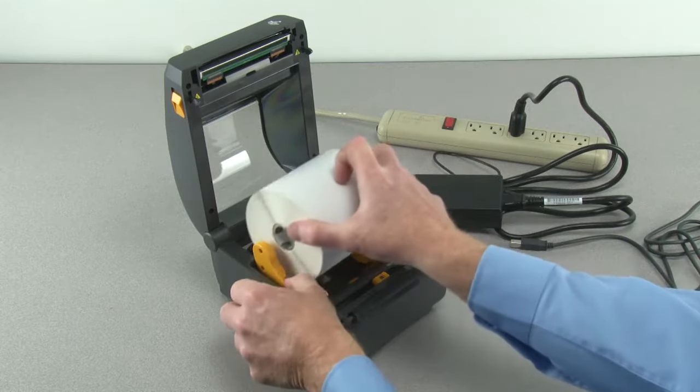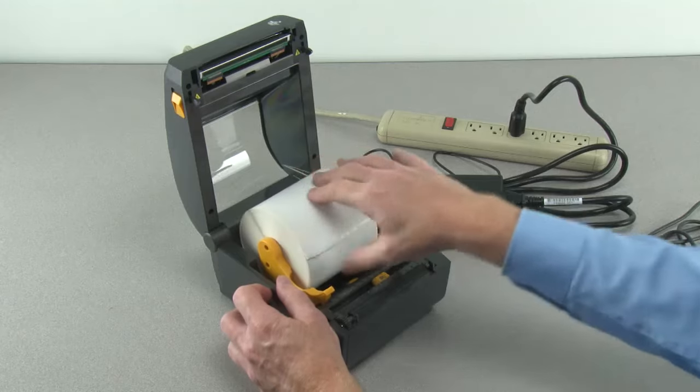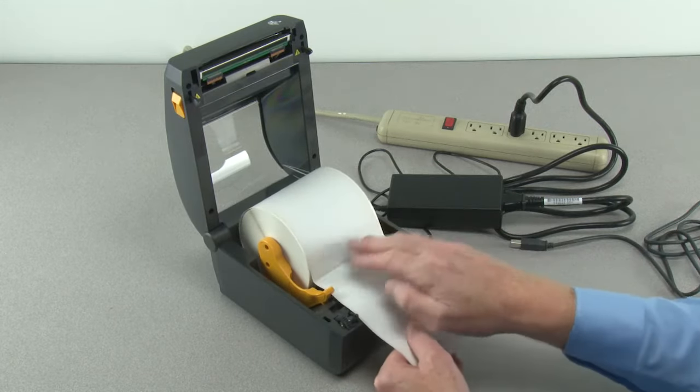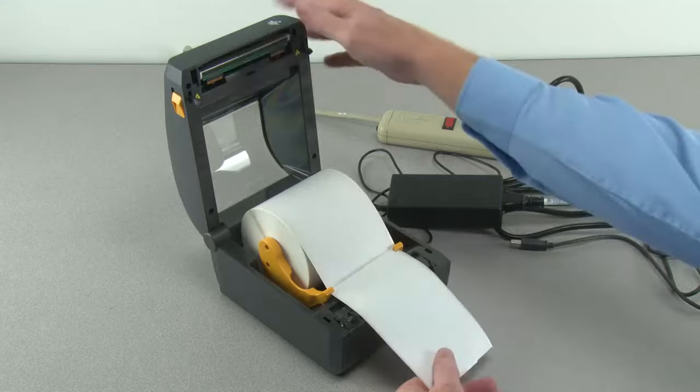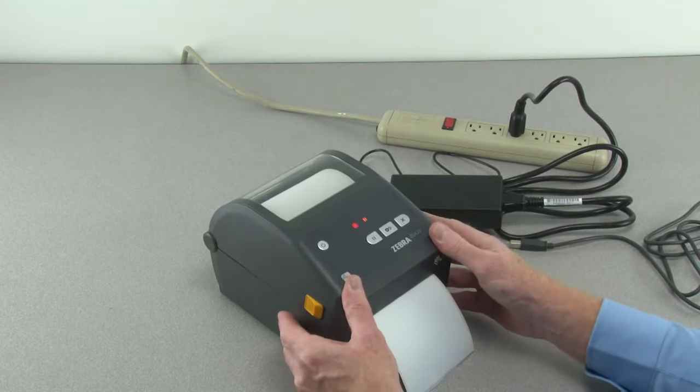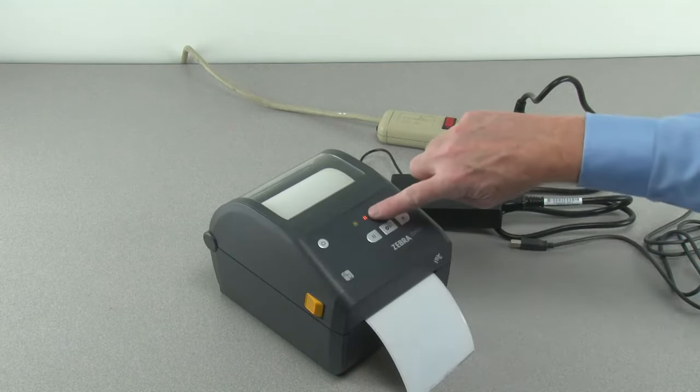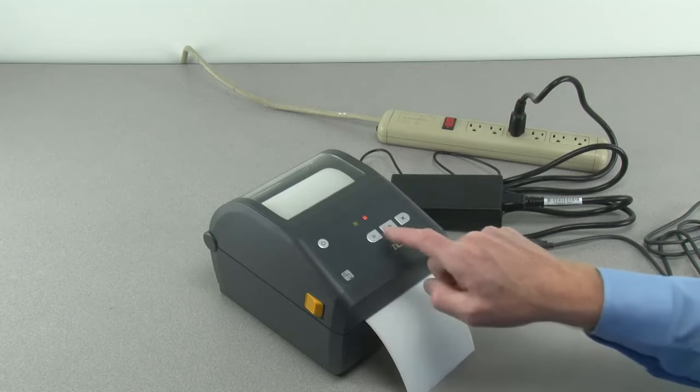Place the supply media in the roll holders. Pull the end of the media out the front of the printer. Press the media down under the media guides. Close the printer. The printer will be in pause mode.